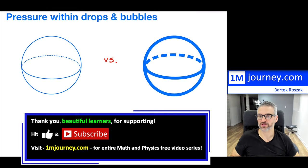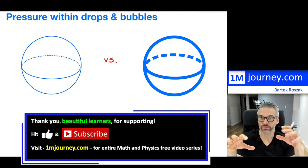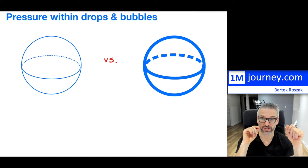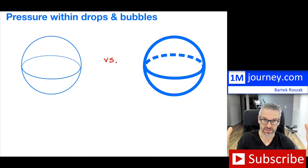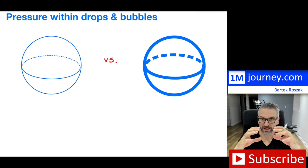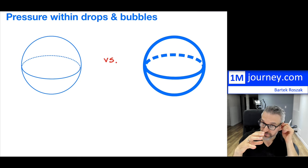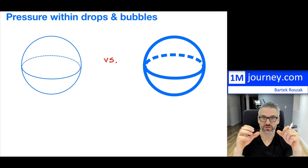Welcome. This video covers pressure within drops and bubbles — specifically deriving the formula for pressure when dealing with a drop and a bubble in the context of surface tensions. Both drops and bubbles have pressure inside that pushes outward against their surfaces, and those surfaces are held intact because of surface tension, which withstands that pressure.